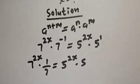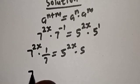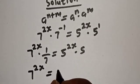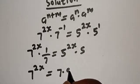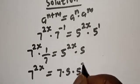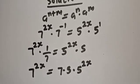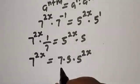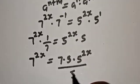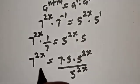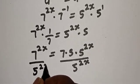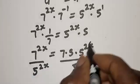Then if you cross multiply, we have 7 raised to power 2s equal to 7 multiplied by 5, then multiplied by 5 raised to power 2s. Now let's divide both sides by 5 raised to power 2s. This will cancel, leaving 7 raised to power 2s over 5 raised to power 2s equal to 7 times 5.